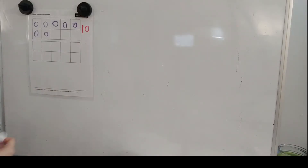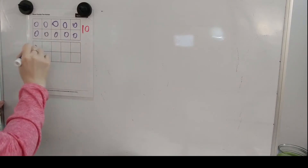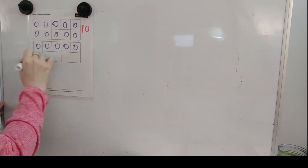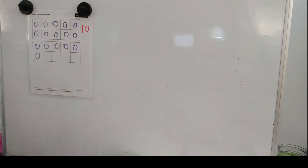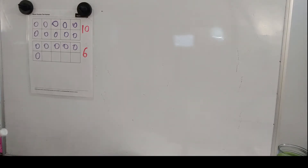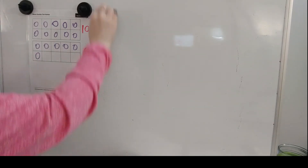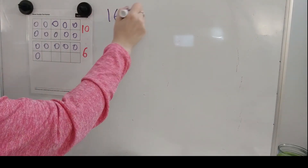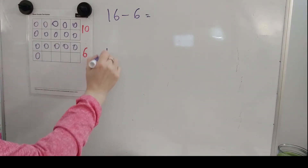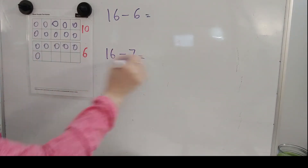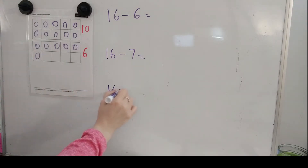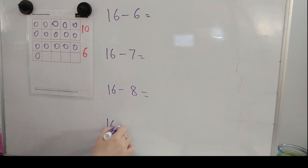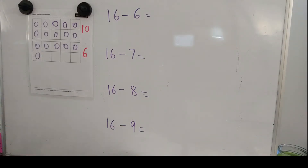Letter B says 16 minus 6. So I'm going to put the number 16 in my 10's frame. 16 has a 10 and a 6. 16 minus 6. I'm going to write this a little higher so I can fit more of them. We also have 16 minus 7, 16 minus 8, and 16 minus 9. Let's do 16 minus 6. I love this one.